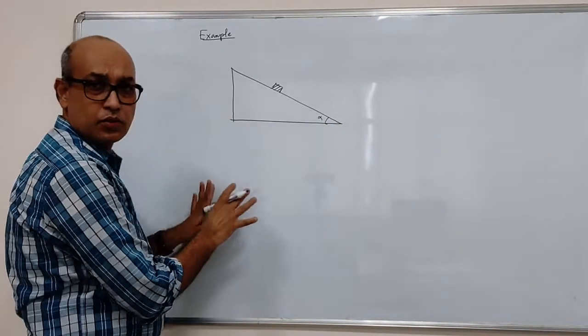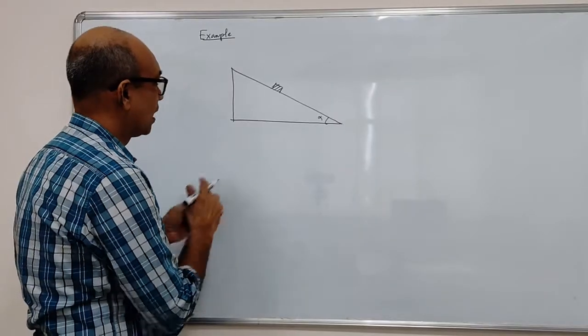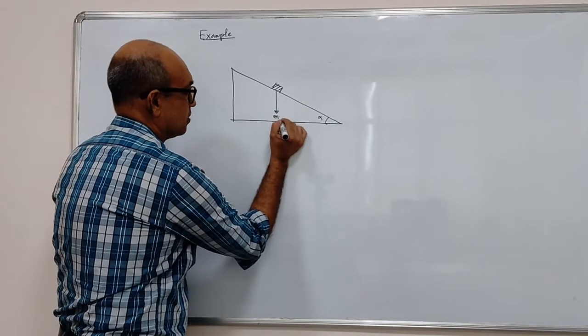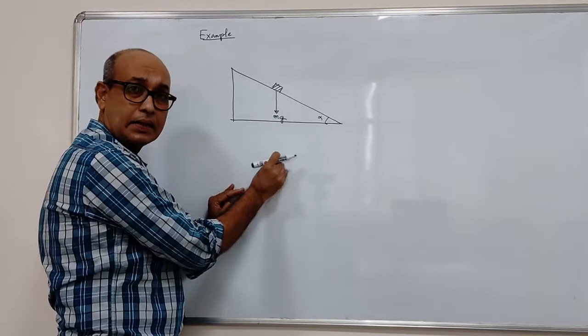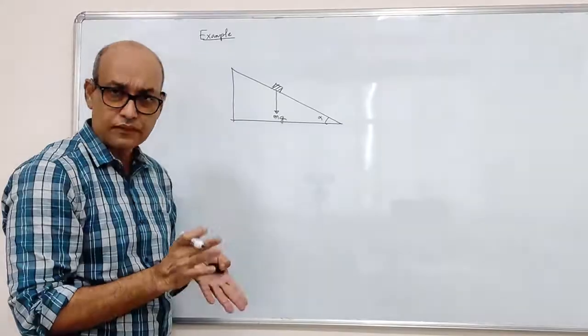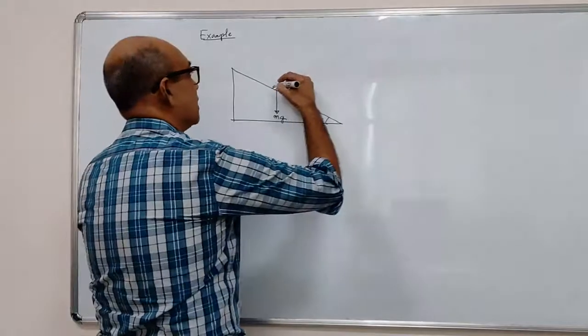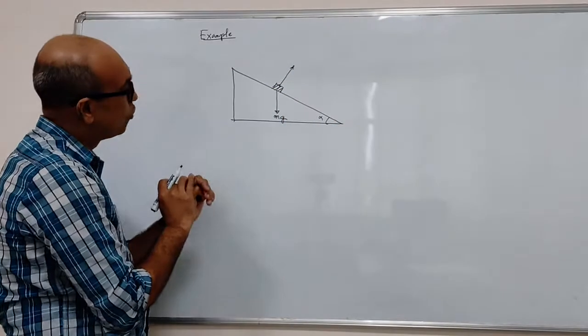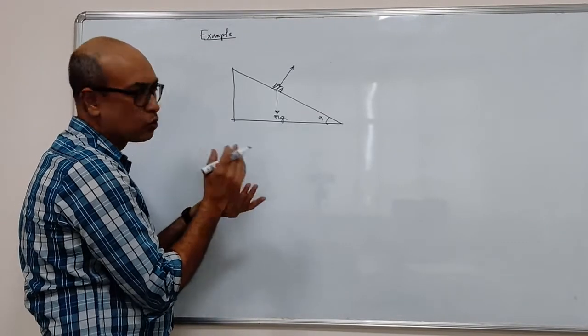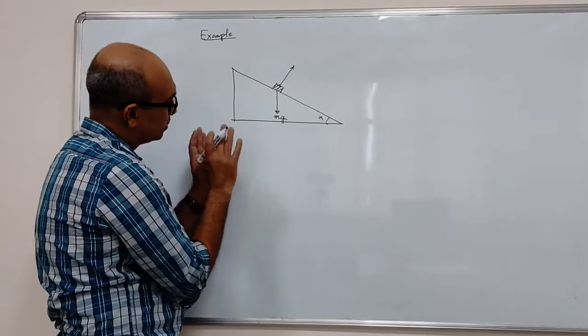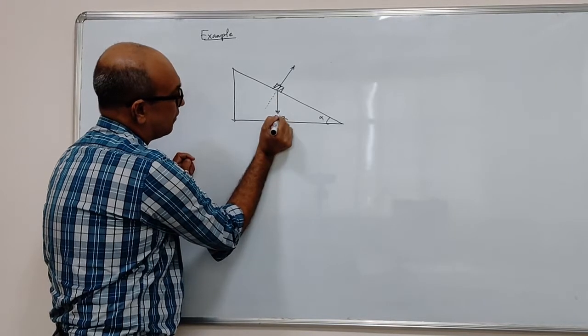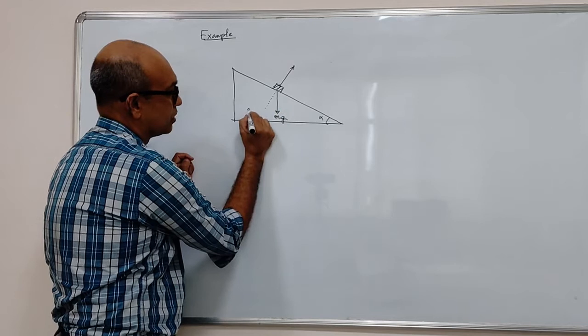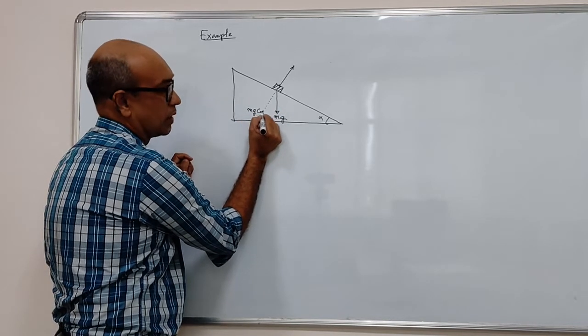So, how do we write the equation of motion? Well, one force we can immediately see, this is gravity, it's acting downward. Another force you are familiar with for this problem, it's basically the normal reaction. The normal reaction, you know how to calculate that. First, you calculate the component of the gravity along the normal, but in the opposite direction. So, it would be mg cosine alpha.